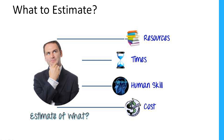Human skills means the knowledge and experience of the team members, and they affect your estimation. For example, a team whose members have low testing skills will take more time to finish the project than one with high testing skills. Cost is the project budget — generally speaking, how much money it takes to finish the project. So that covers what to estimate: resources, time, human skills, and cost.